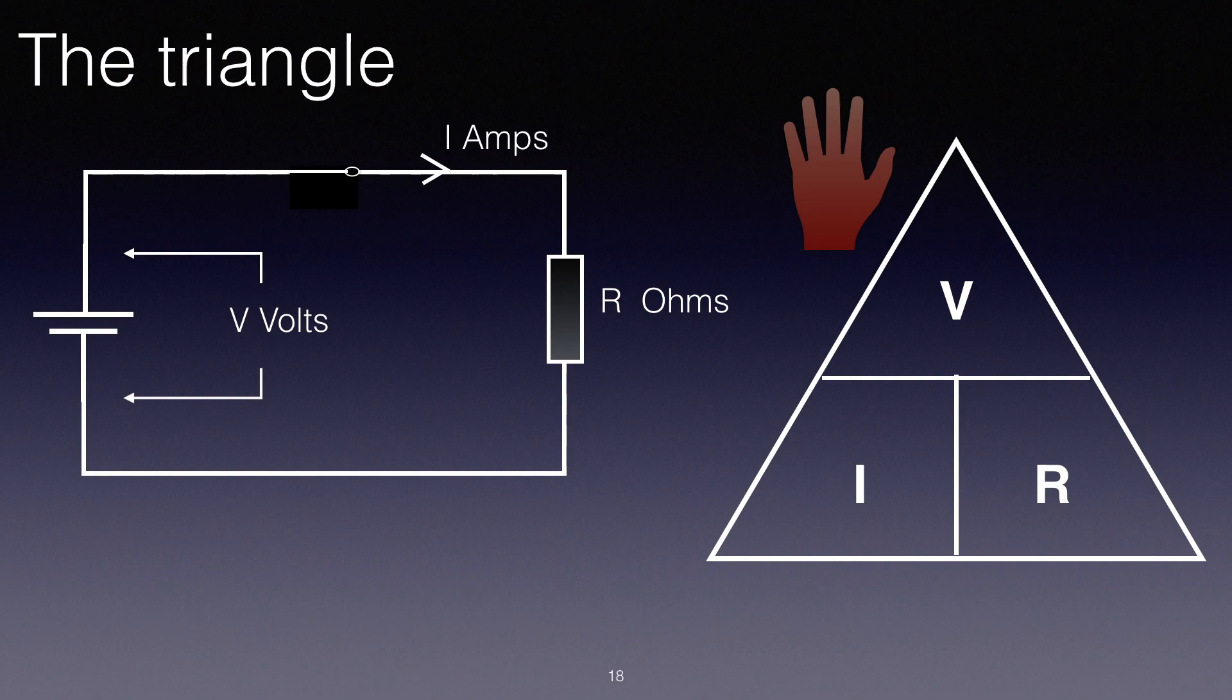Let's take the first one. If we cover up the V, then you can see on the bottom all that is left is I and R, and they're on the same level. So below the triangle we can write the formula V equals I times R.